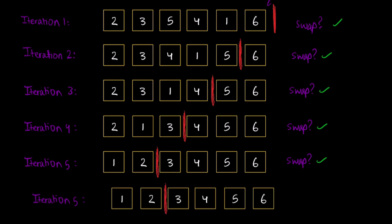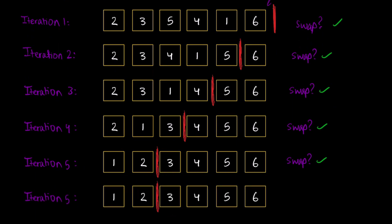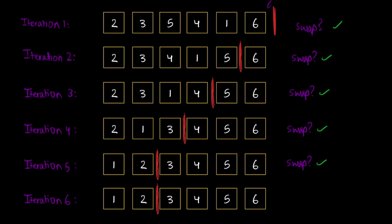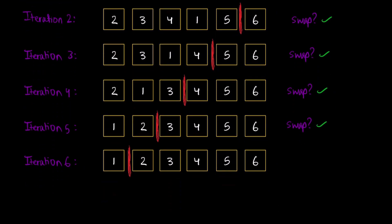In iteration 6, the only element left to consider is 1. There are really no swaps to do. So we ask: did we do a swap? The answer is no. At this point, because we didn't do any swaps, we return out of our function. The other case is that if we were to do another iteration, the index would move all the way to the left, meaning there are no more iterations to do and our list is sorted.